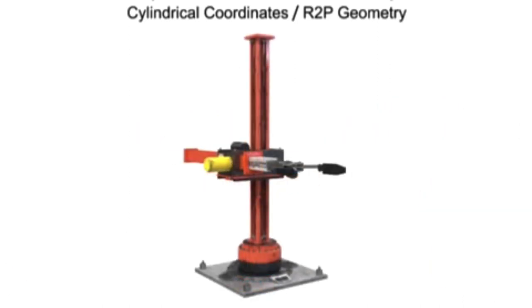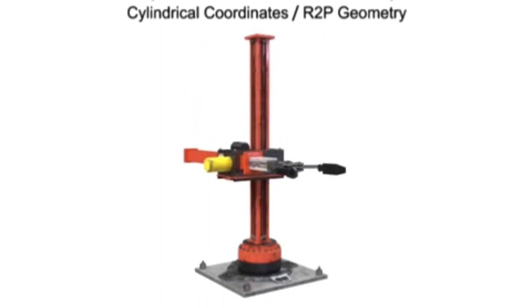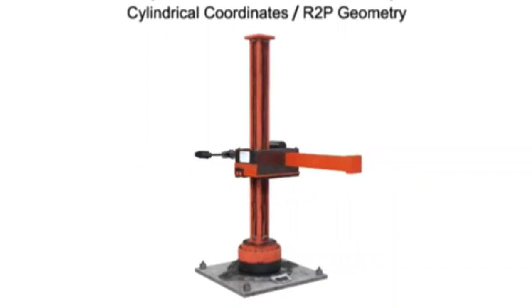Robotic arms with cylindrical geometry move linearly in two directions. Vertical linear motion is called stroke, horizontal linear motion is called reach, and rotational motion is called swing.